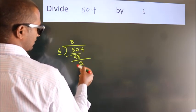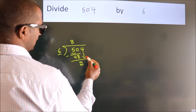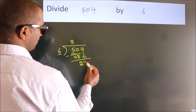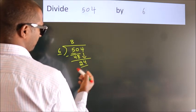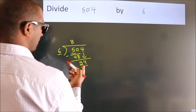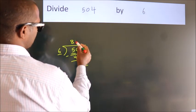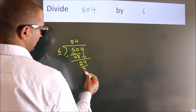After this, bring down the beside number. So, 4 down. So, 24. When do we get 24? In 6 table, 6 times 4, 24.